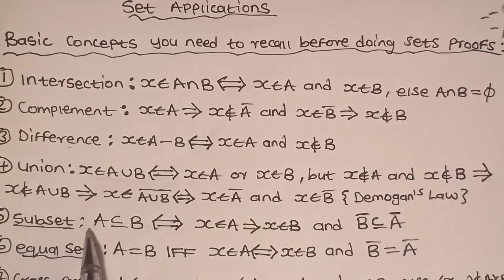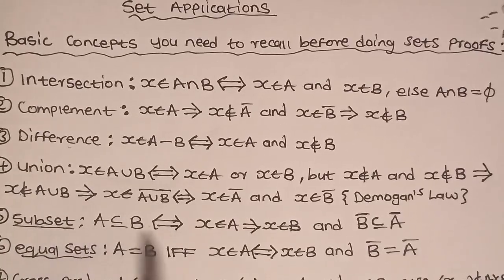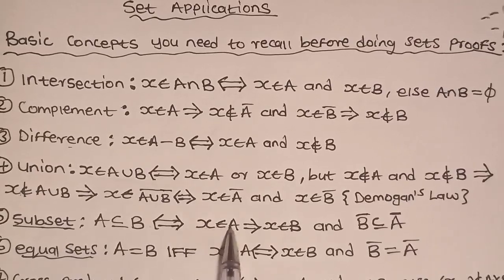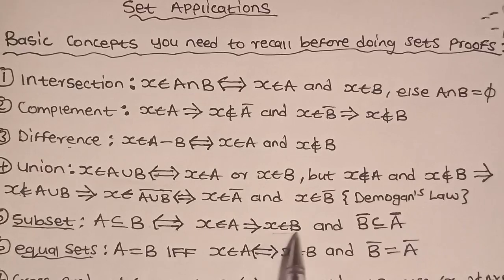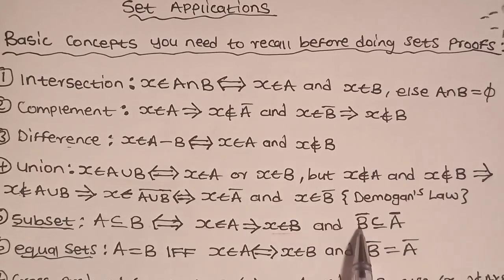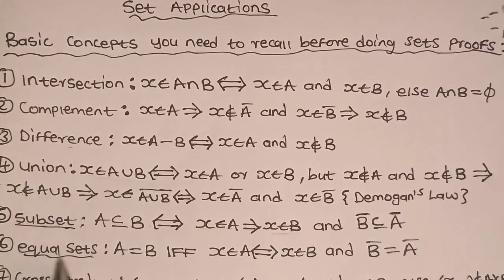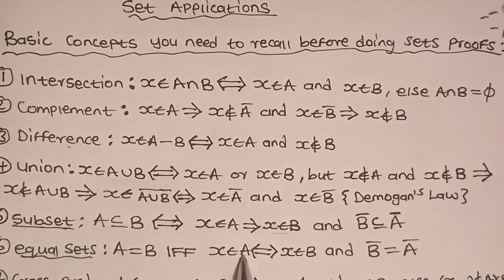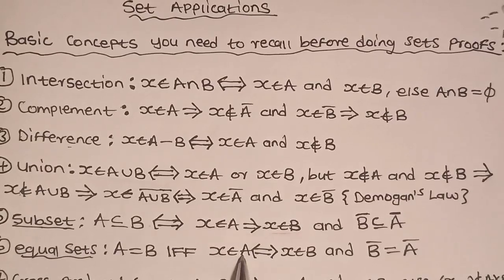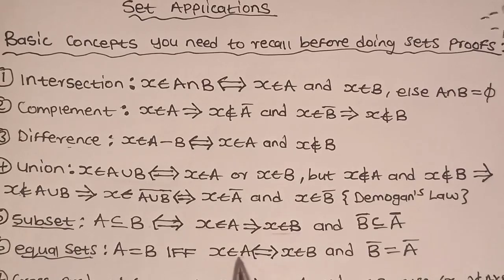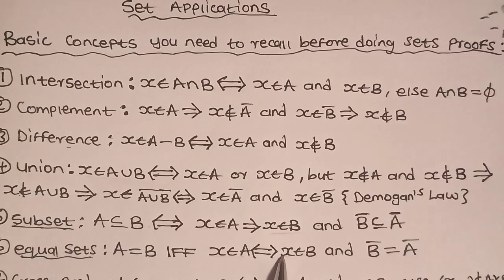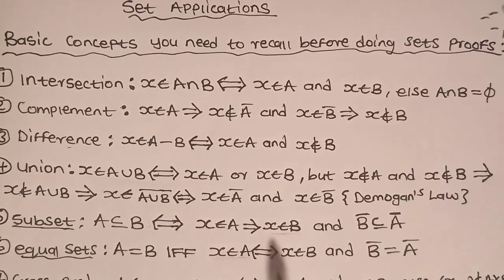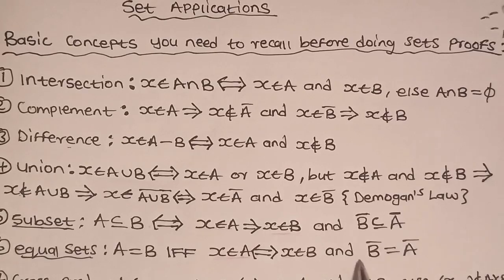Subsets: A is a subset of B, if and only if X is an element of A implies X is an element of B, and also if B complement is a subset of A complement. Equal sets: A equals B if and only if A is a subset of B and B is a subset of A. Also, A complement is the same as B complement.